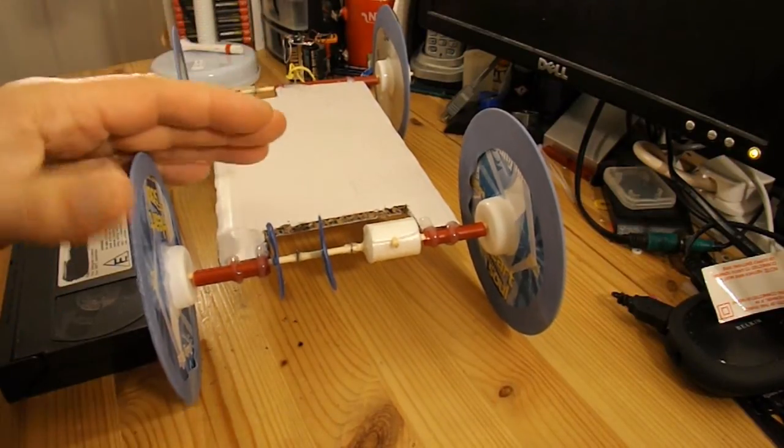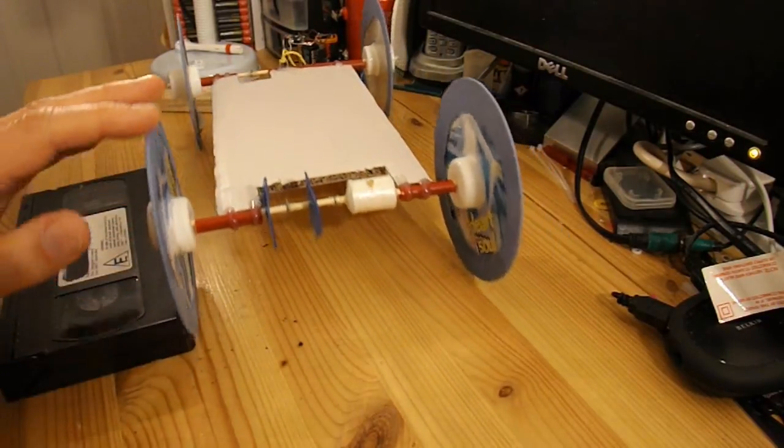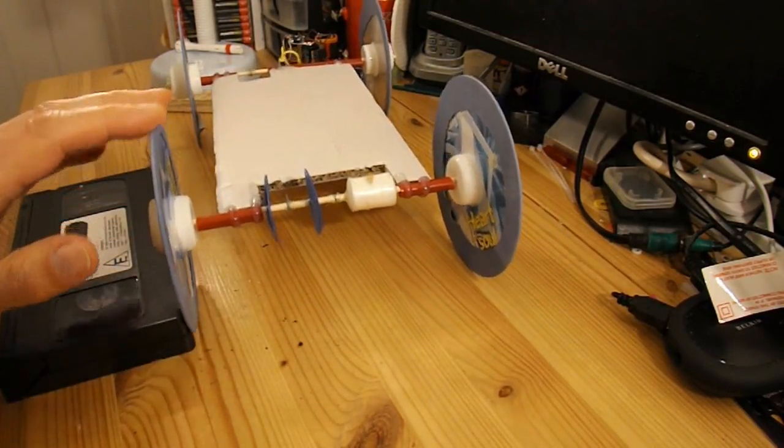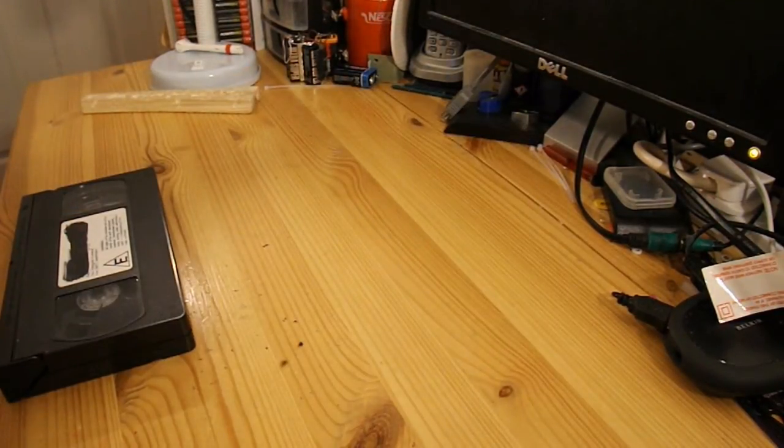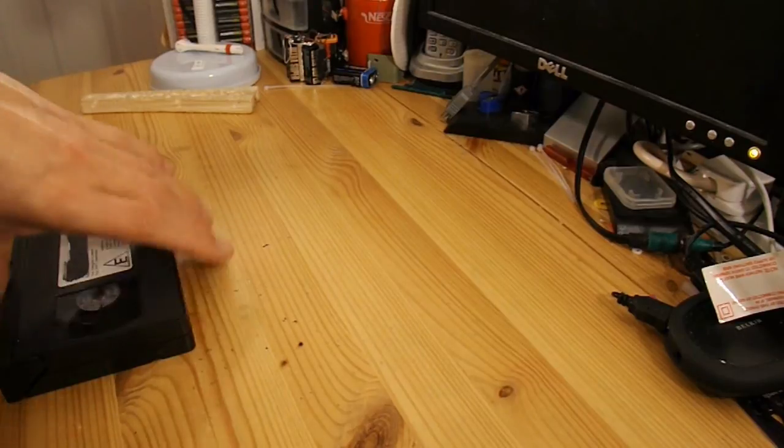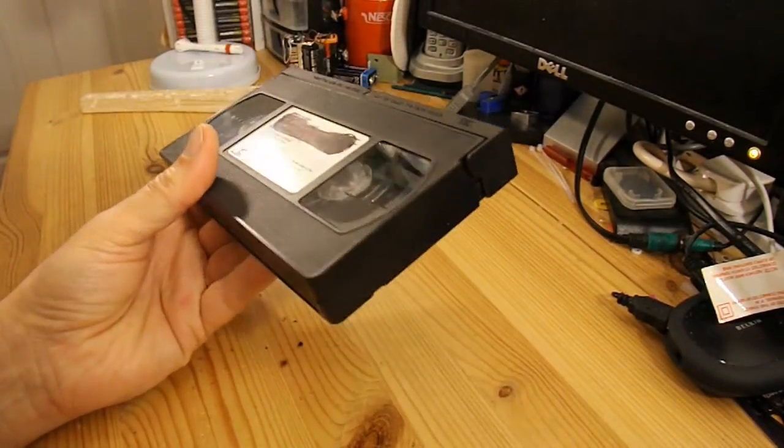So what I'm going to do is fit a ratchet effect that allows the car to roll forwards but stops it from going backwards, and to do that I'm going to use an old VHS cassette.